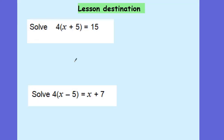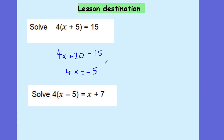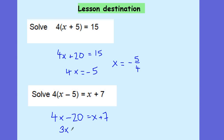And finally for today's lesson, please pause the video and in your light blue books solve these two questions. First: expanding gives 4x plus 20 equals 15; taking away 20 from both sides gives 4x equals negative 5, so x is equal to negative 5 over 4. For the second one: 4x take away 20 equals x plus 7; adding 20 to both sides and subtracting x leaves 3x equals 27, which tells me x is equal to 9. That's all for today — please complete the exit ticket I've posted on Google Classroom. Have a lovely day, thank you very much.